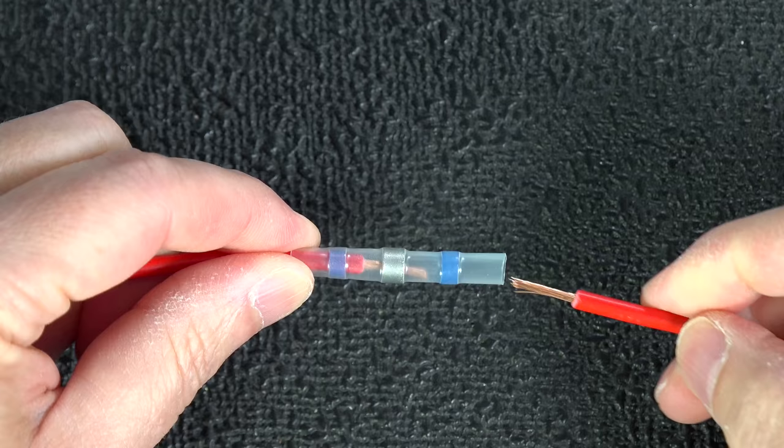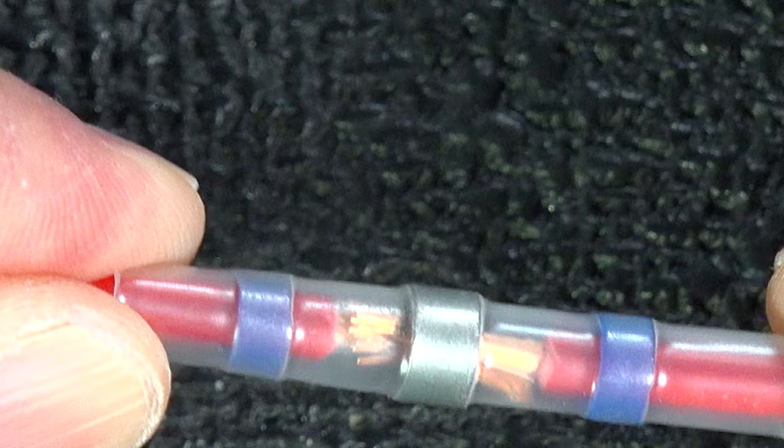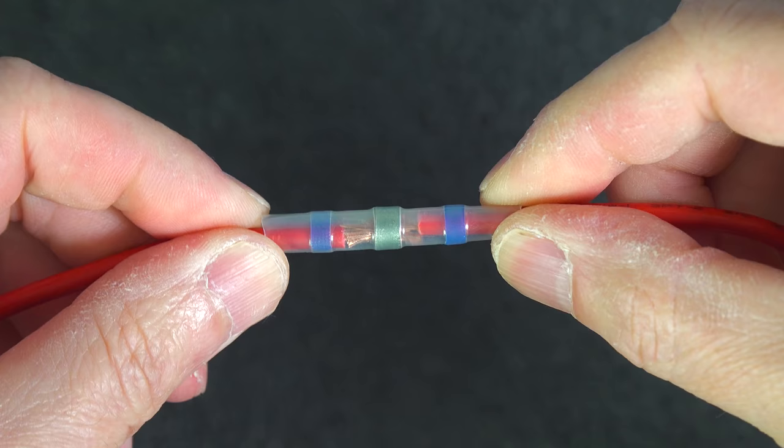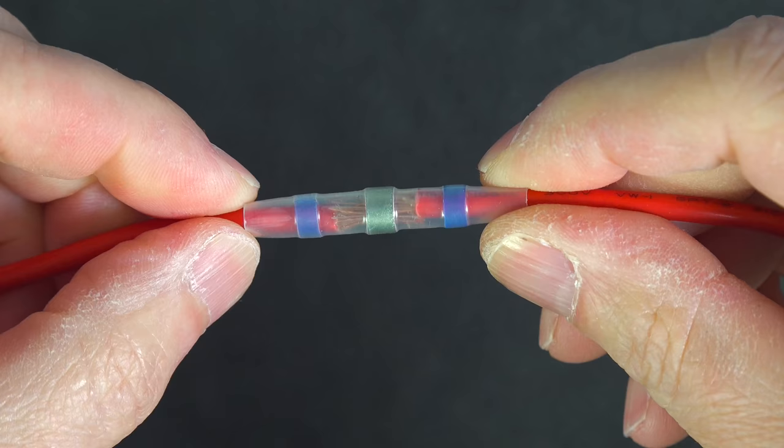So when you insert them into the connector, you want to make sure that the insulation is underneath those colored bands, but the other difference is you're not going to twist the end of those wires. You're going to press them into the connector as shown, and then when you insert the second wire, you're actually going to push that wire into the other. So they're going to kind of intermingle in the middle, and that's going to help you form a better connection.